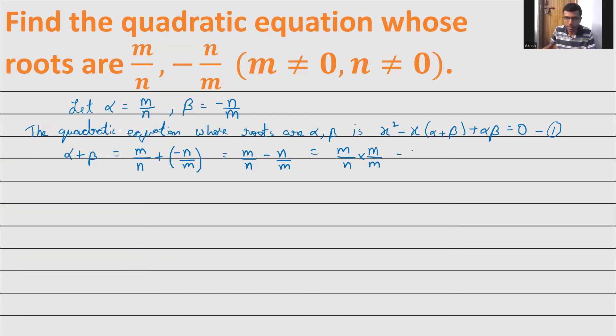This gives m/n times m/m minus n/m times n/n. Why did I do so? Now m times m is m², so m²/mn minus n times n is n², n²/mn. Since the denominator is the same, mn, I get (m² - n²)/mn. For this purpose I did that multiplication.